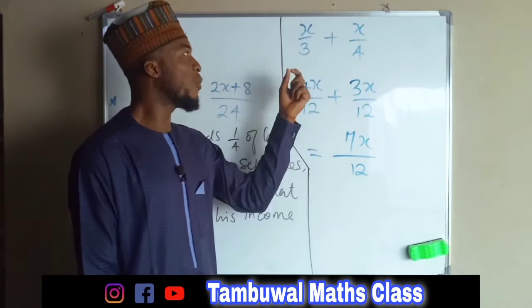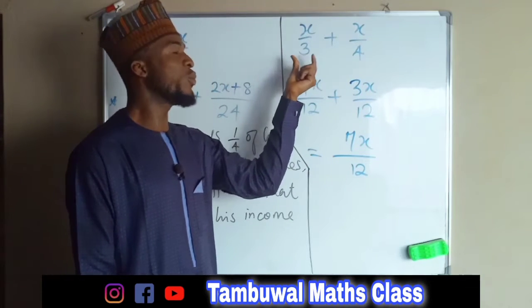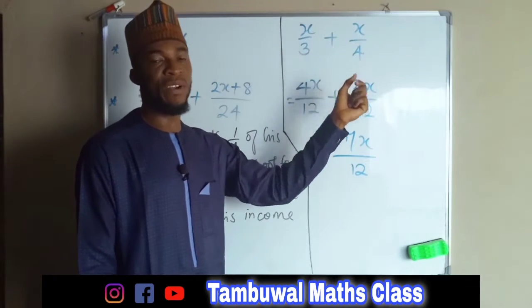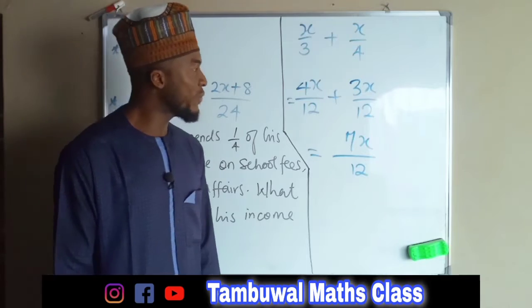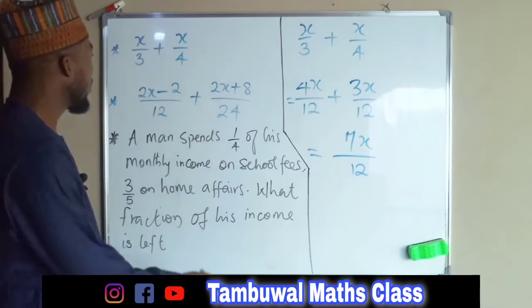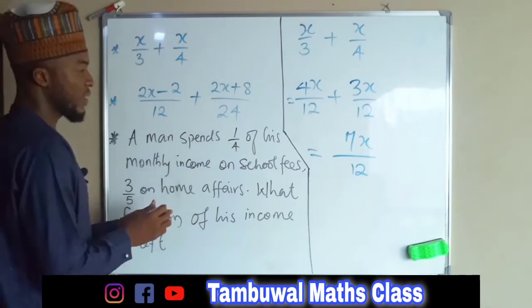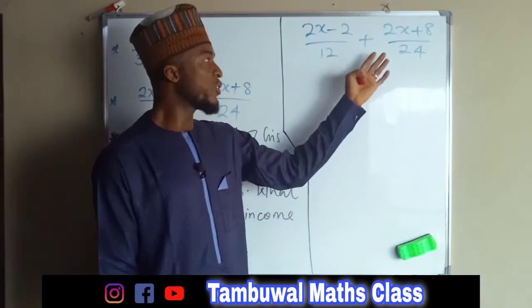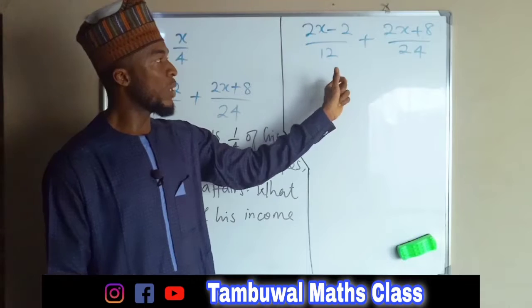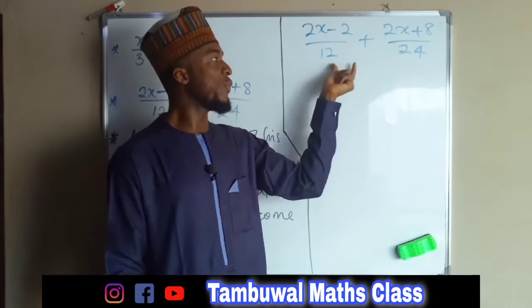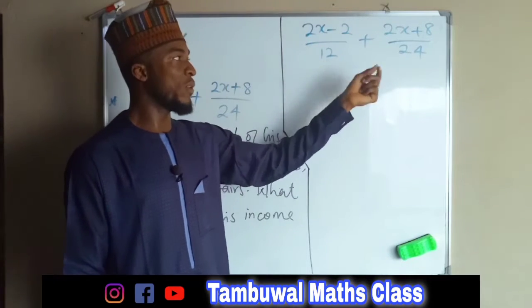So 7x over 12 is the simplified form of these two fractions. Now let us move on to the second one. We want to make sure that they have a common denominator — this one is 24 and this one is 12.